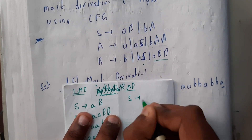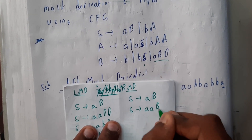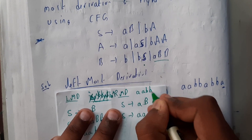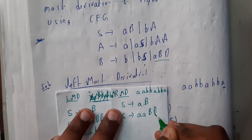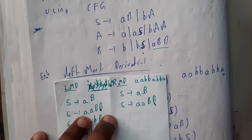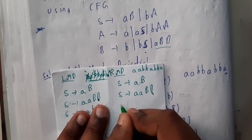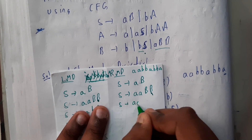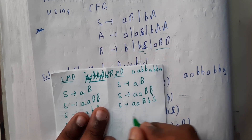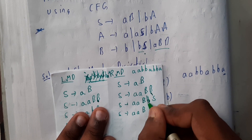Now let us do the rightmost derivation. In rightmost derivation, you consider from the right. Starting with S → AB, you consider the rightmost B first. Check from the ending: 'bbabba' — at the end you need 'a', so think about what production gives 'a' at the end. Take B → BS, since we need to work toward the rightmost symbols.